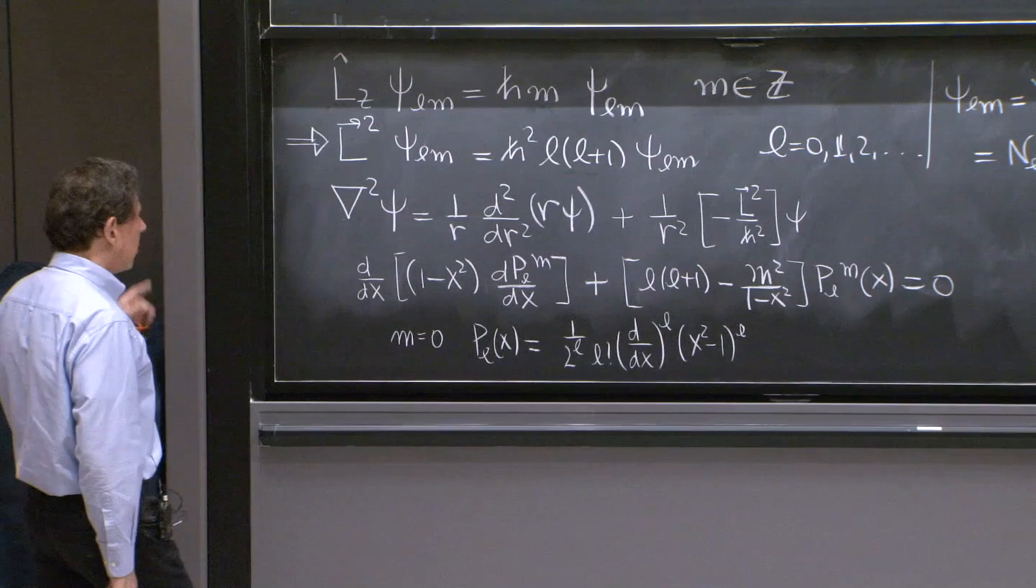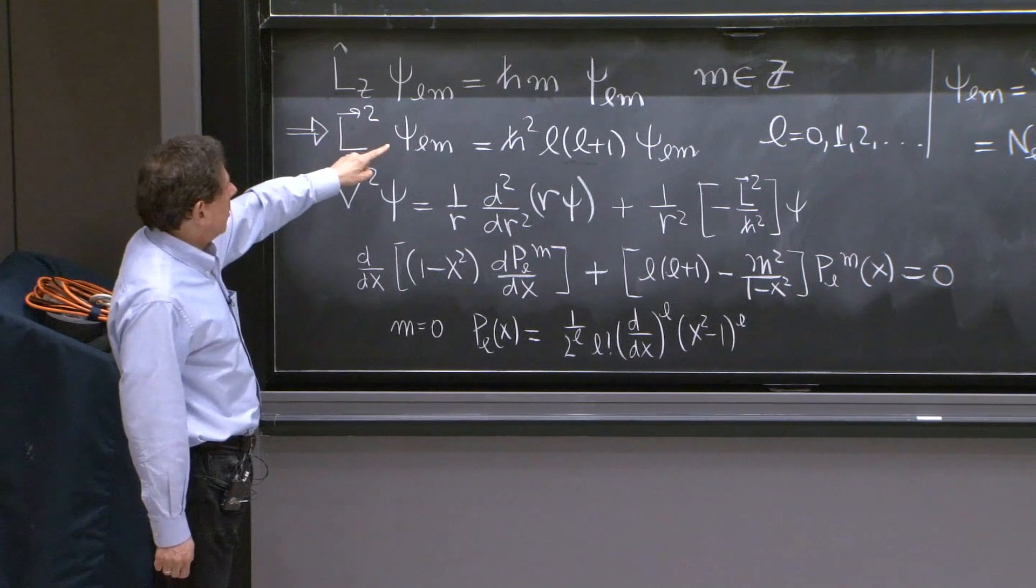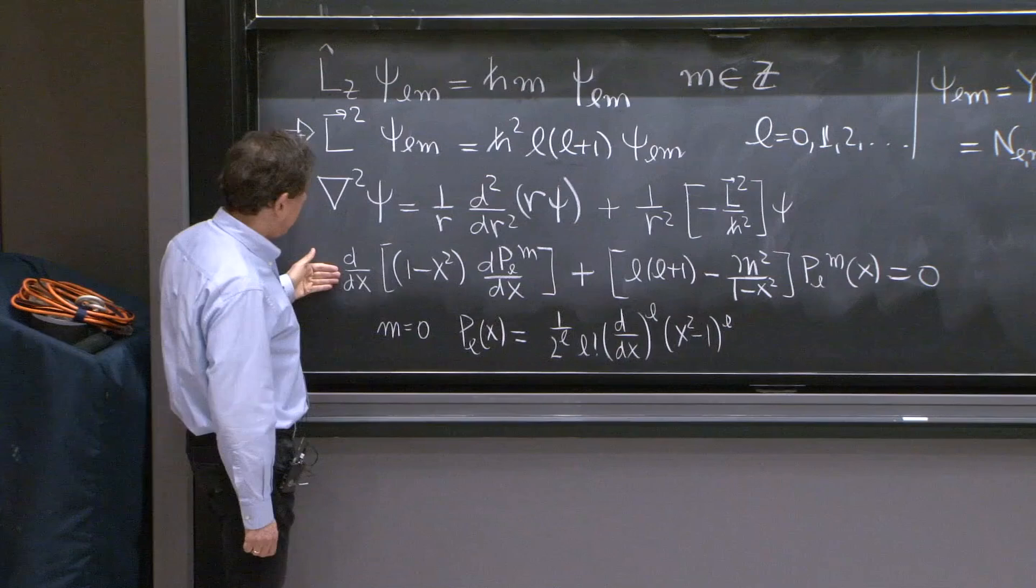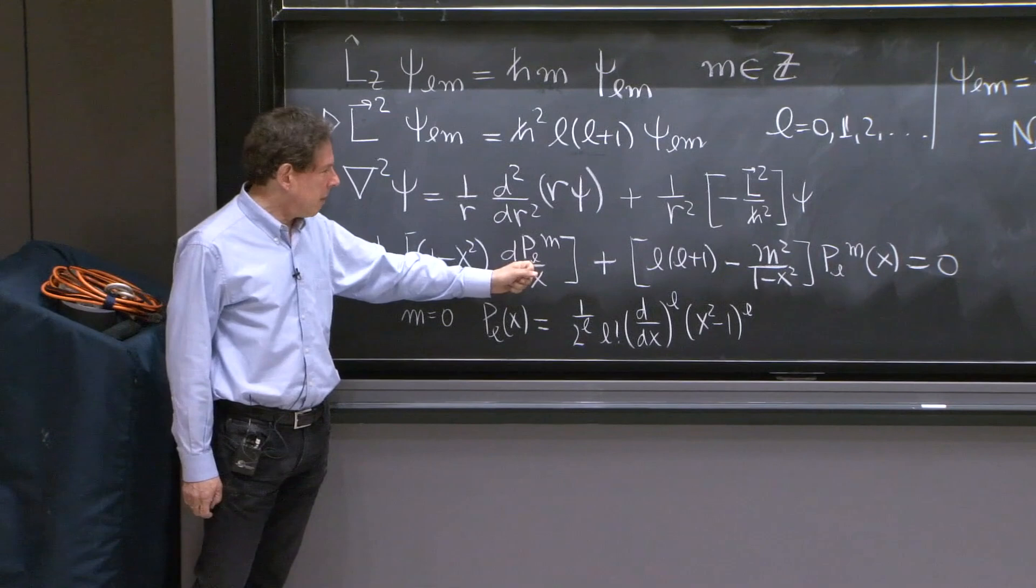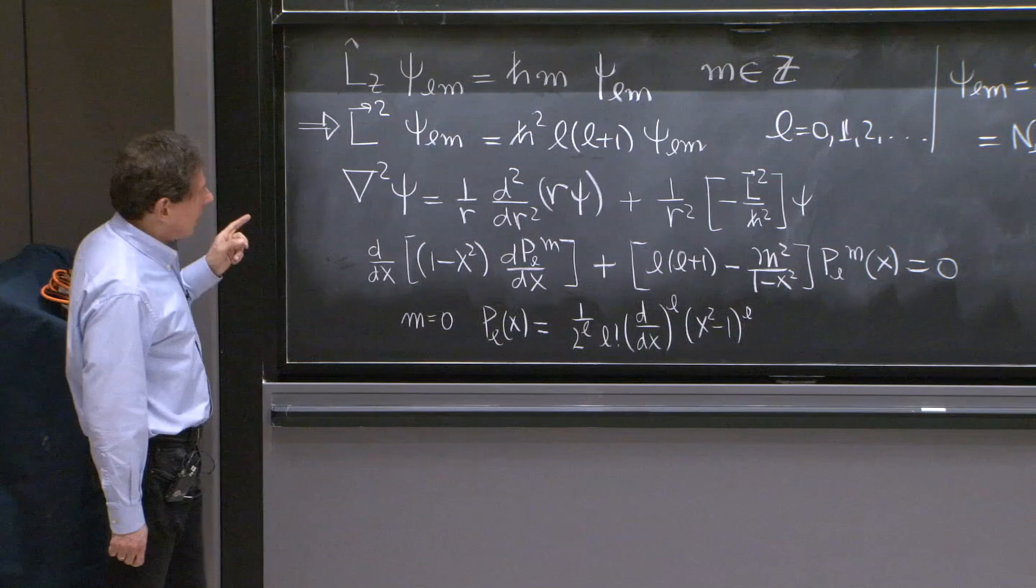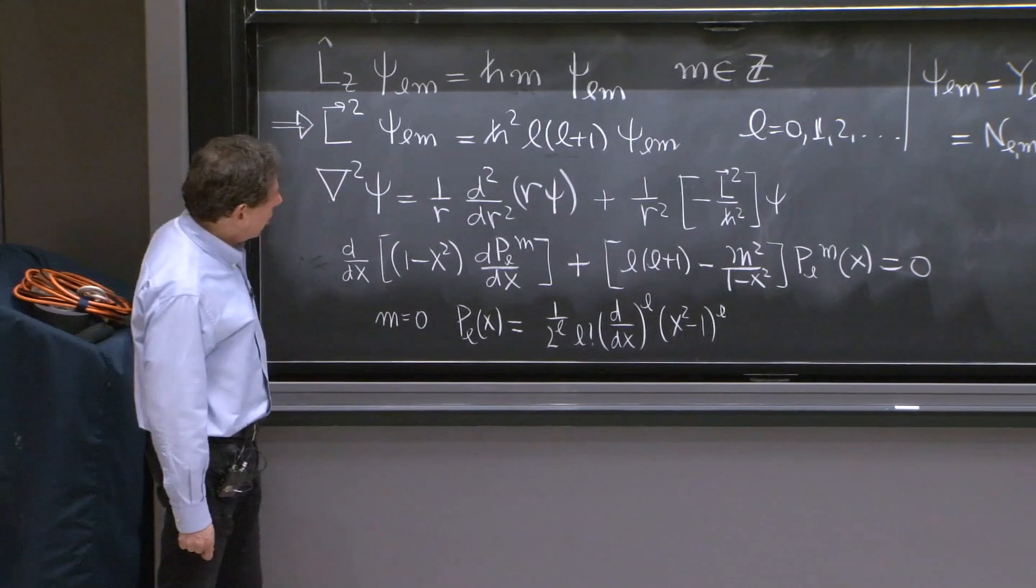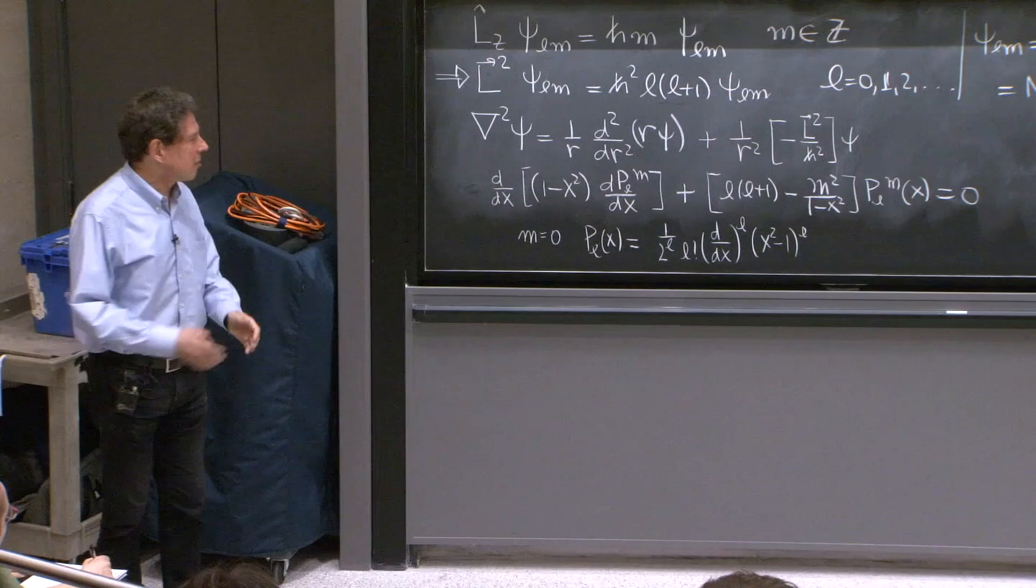The differential equation for L squared, this can be thought as a differential equation, ended up being of this form, which is an equation for the so-called associate Legendre functions. And for the case of M equals 0, it simplifies very much, so that it becomes an equation for what were eventually called Legendre polynomials.